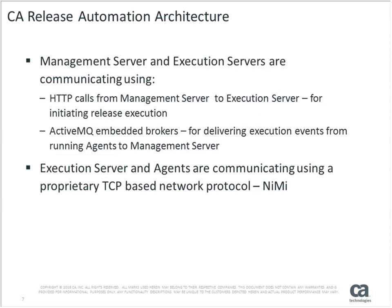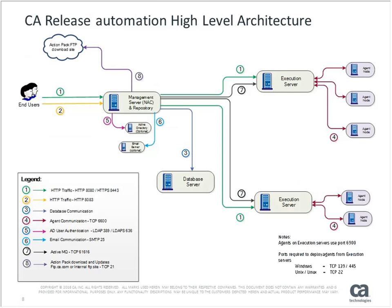When we talk about our management server talking to an execution server, we have two protocols: HTTP and ActiveMQ. HTTP is used for initiating releases. The ActiveMQ bus is for sending events back to the management server. The agent passes its messages via NIMI — a proprietary protocol — from execution server to agent. The execution server then passes that data back to the management server via the ActiveMQ bus, and the management server updates the database.